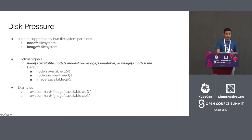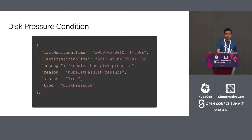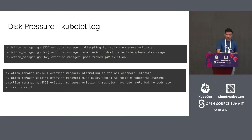These are the default values for these disk pressure signals, and they can be configured as hard or soft eviction. The threshold can be expressed as an absolute number — for example 10 GB — or as a percentage of the resource. This is the snippet of kubectl get node output showing a node under disk pressure: type DiskPressure, status true, message Kubelet has disk pressure.